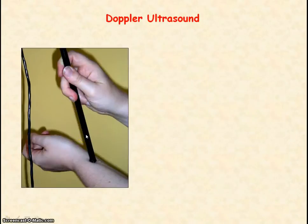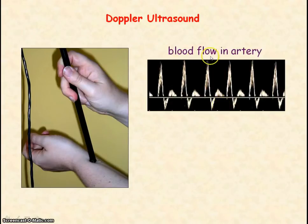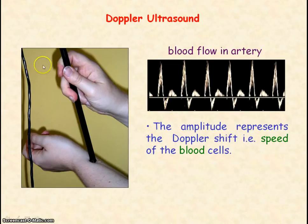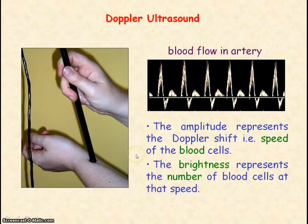This diagram shows an ultrasound probe being directed towards an artery. Here is the resulting trace showing the blood flow in the artery and how the blood pulses. The amplitude represents the Doppler shift — the change in frequency — and so represents the speed of the blood cells. The negative Doppler shift shows the backward flow of blood due to the elasticity of the arteries, before the blood cells move forward again with the next pulse through the artery. The brightness represents the number of blood cells travelling at that speed.